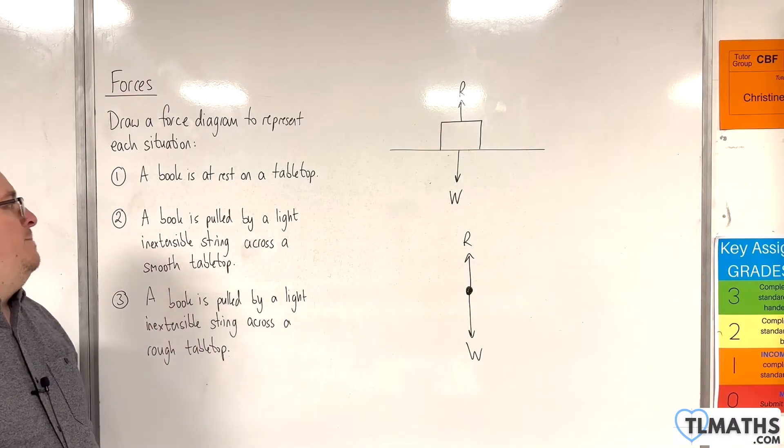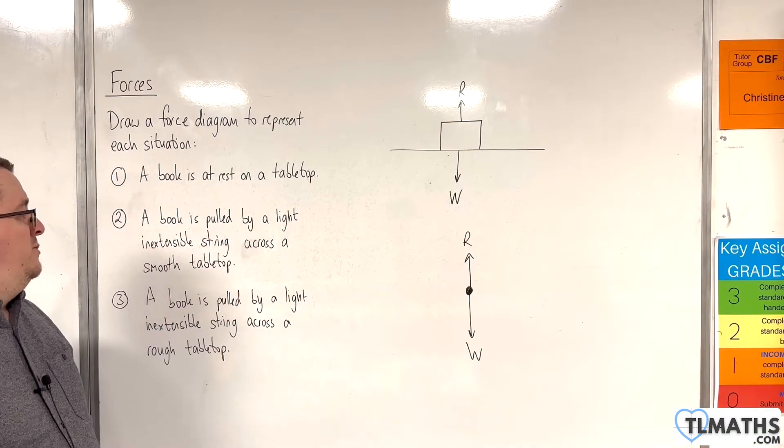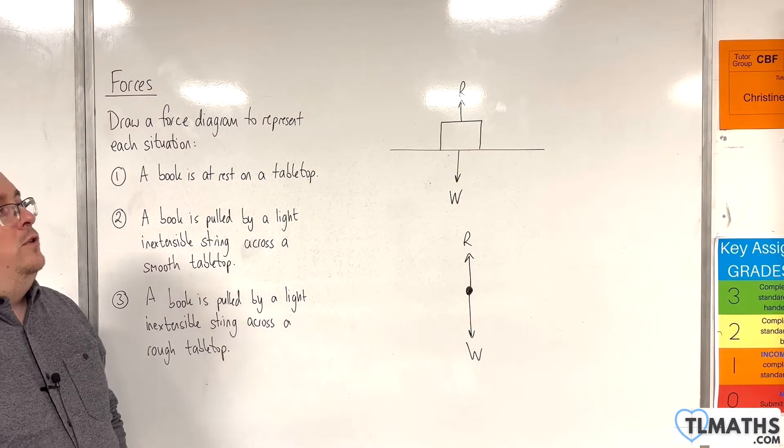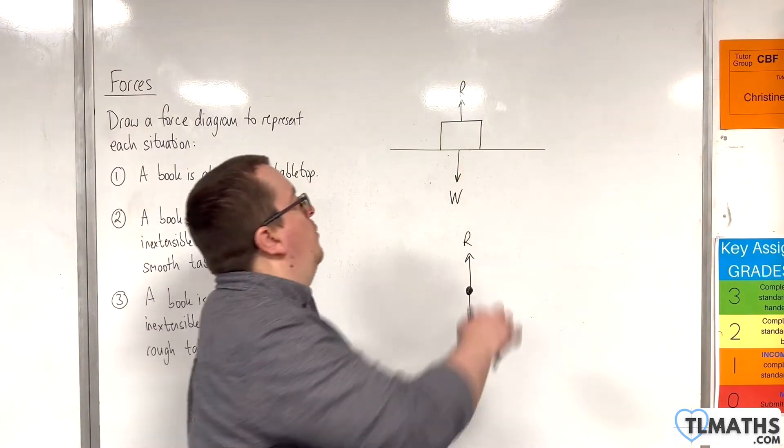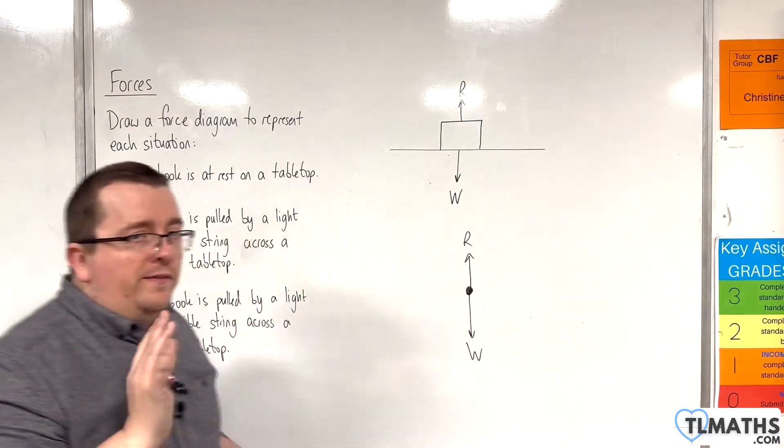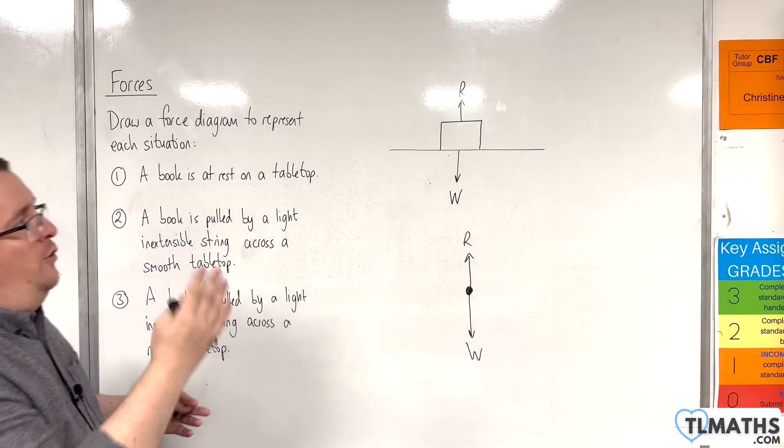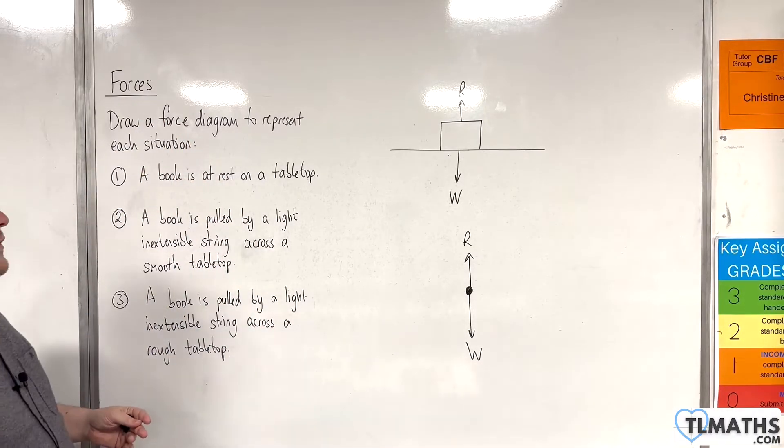So number two, a book is pulled by a light, inextensible string across a smooth tabletop. So just because the book is now moving doesn't mean that the weight or the normal reaction force are no longer there. They will both still be there. The weight acting vertically downwards and the normal reaction force perpendicular to the surface.